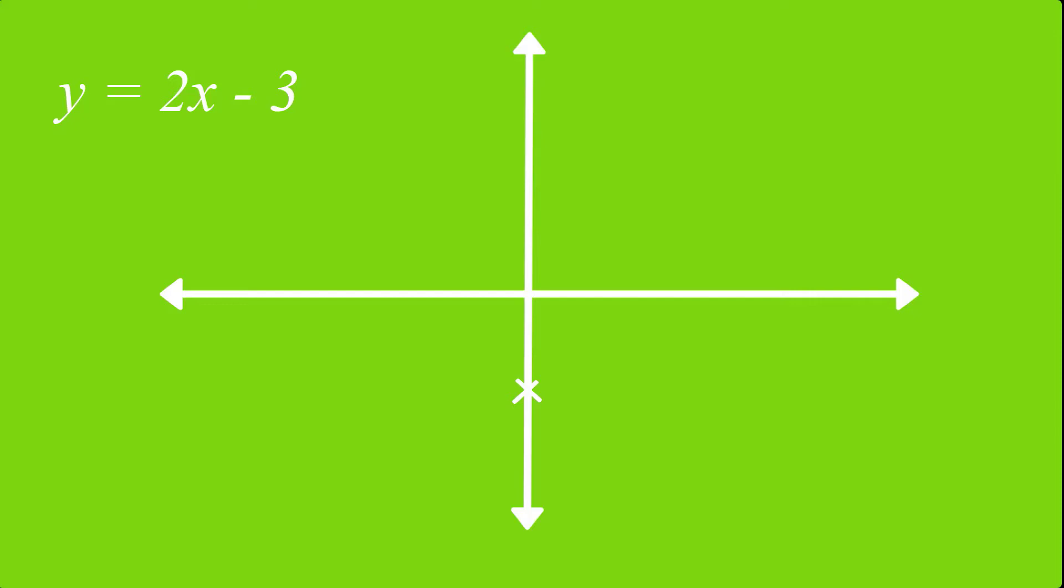Next, the gradient is 2, which means that my line is moving up by 2 units each time I go across. So if I go across once and go up to, that point is going to be on my line. So I can mark that off. And now that I have those two points, then I can draw my line. So that means my graph would look like this.